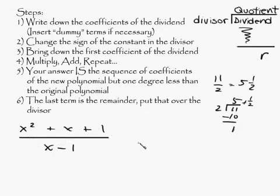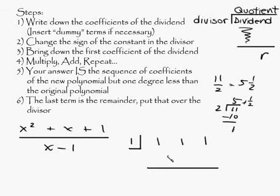Okay, and so let's go ahead and do this problem here. So the coefficients are basically going to be 1, 1, and this is just a 1. So you're going to have 1, 1, and 1. Okay? And what you're going to do is change the sign of the constant in the divisor. This is the constant in the divisor. You're going to change the sign to a positive 1. And you're going to bring down the first coefficient of the dividend. Okay, so let's set this up.